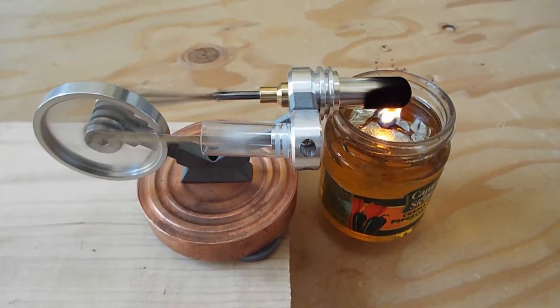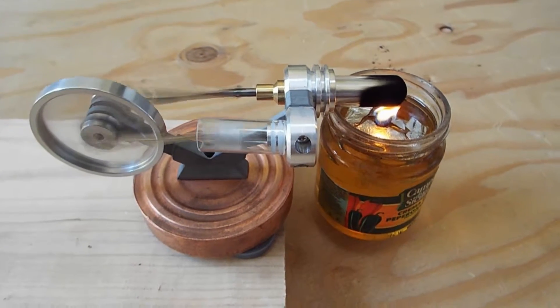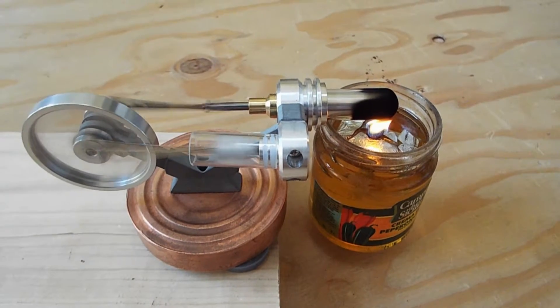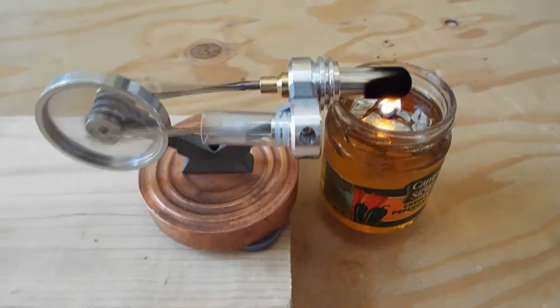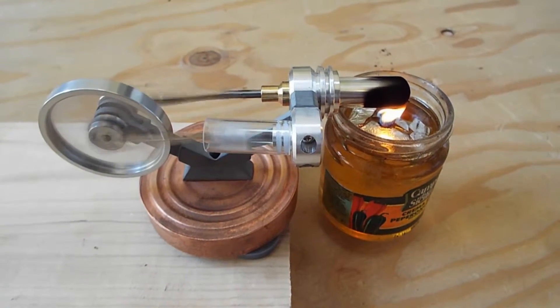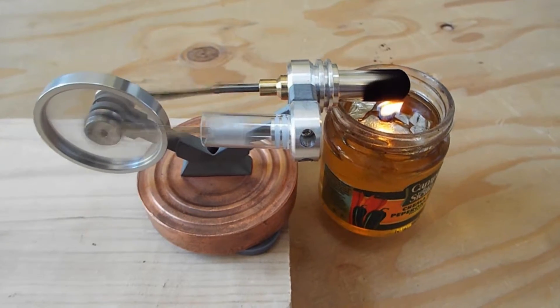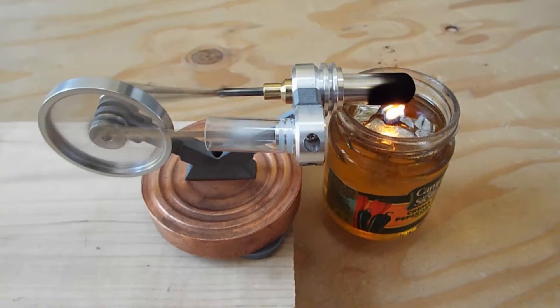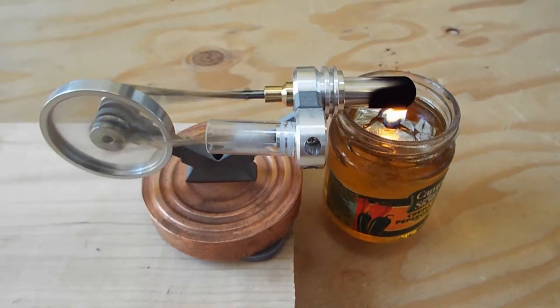So here it is running off the vegetable oil candle I made. This little jar of vegetable oil burned for about eight hours. It doesn't run quite as fast as when it's running off the alcohol. I think the alcohol burns a lot hotter. It runs pretty good.